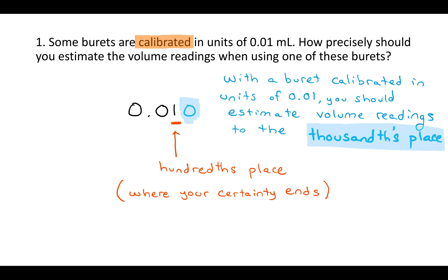If the burette is calibrated in units of 0.01, you should estimate the volume readings to the thousandths place. If the burette were calibrated to the thousandths place, then you would write the number to the ten thousandths place. You always just put one more decimal place to the right than what it's calibrated to.